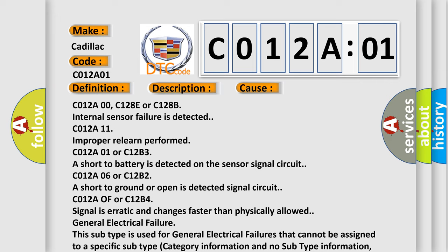General electrical failure. This subtype is used for general electrical failures that cannot be assigned to a specific subtype category information and no subtype information. EGDTC 803901 B003901 2nd row right frontal stage 1 deployment control. General electrical failure.